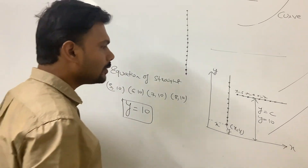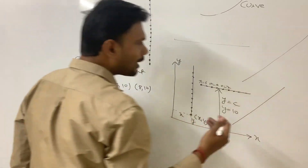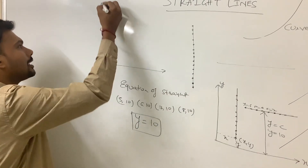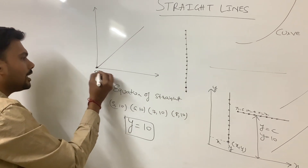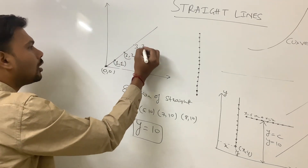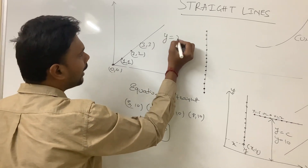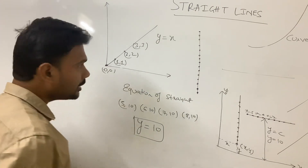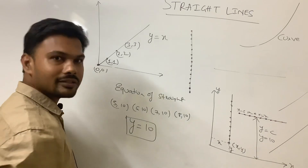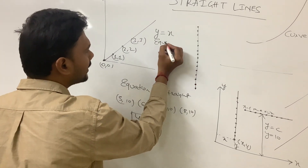There may be a straight line where all coordinates have the same x and y value. For example, points like (0,0), (1,1), (2,2), (3,3) all lie on such a line. If you want to write the equation of this kind of line, you write it as y = x. It means the value of x and y is the same for all points lying on this straight line — they all satisfy this relation.